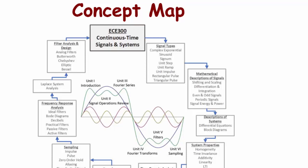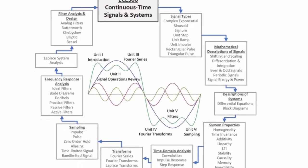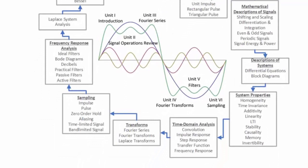Next we look at different ways to describe systems, such as differential equations and block diagrams, which you will see again in controls and also saw in circuits and systems. System properties — which you studied in circuits and systems — include homogeneity, linearity, time invariance, stability, causality, memory, and invertibility. Then time domain analysis covers convolution, impulse response, step response, transfer functions, and frequency response.